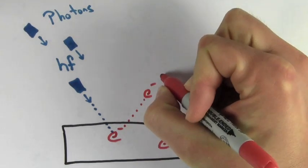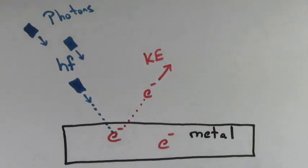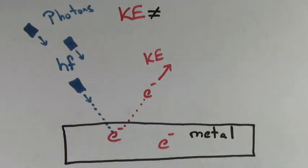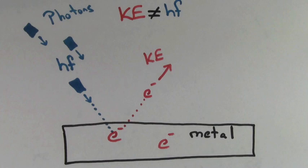And if the energy of the photon is great enough, that electron will go flying out of the metal with a certain kinetic energy. Here's the weird part, the kinetic energy of the electron will not equal the energy given to it by the photon.